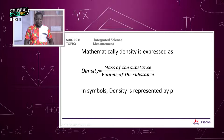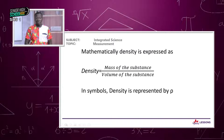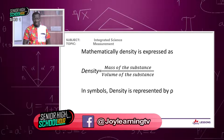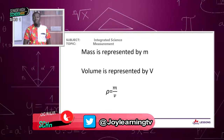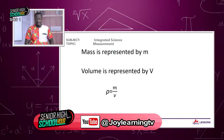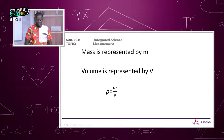Mathematically, density equals mass of the substance divided by the volume of the substance. In terms of symbols, density is represented by the Greek letter rho, mass is represented by m, and volume by v. So rho equals m divided by v. We are going to use this expression very soon to do simple calculations.